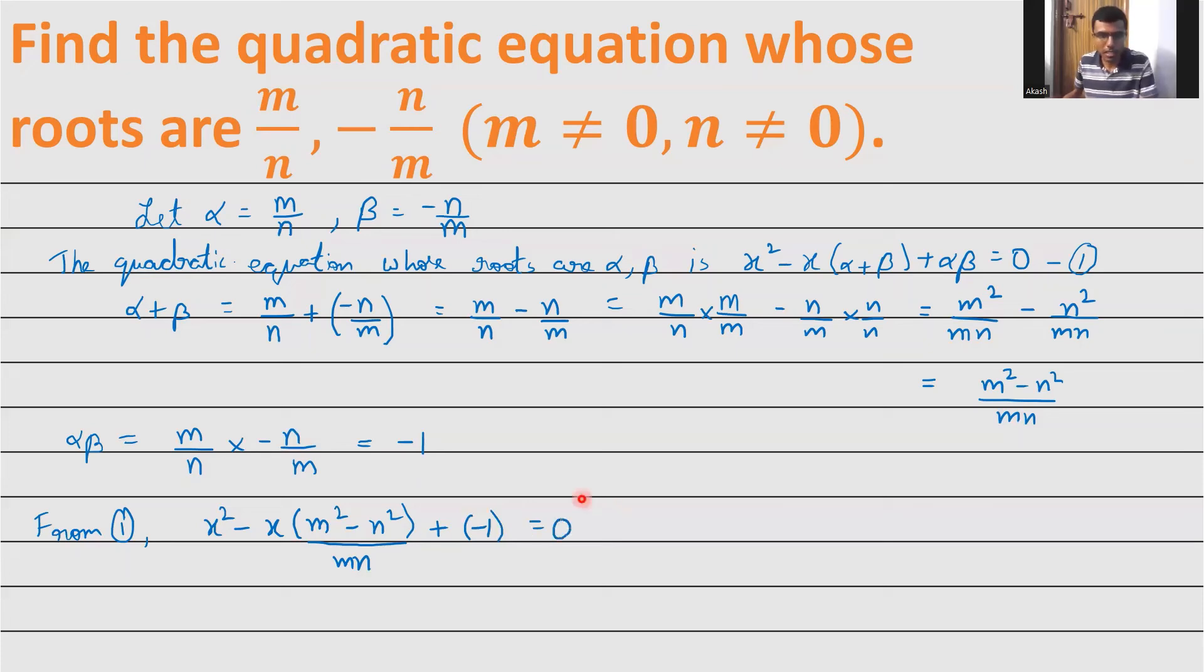It's always better not to keep anything in the denominator in a quadratic equation. Since there's mn, I'll multiply the entire equation by mn. This gives mn·x² - when multiplied by mn the mn terms cancel, leaving -x(m² - n²), and -1 times mn gives -mn equals zero.